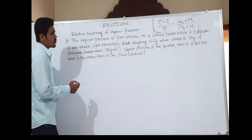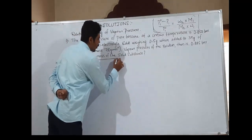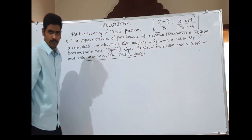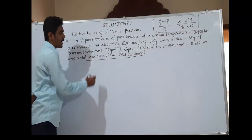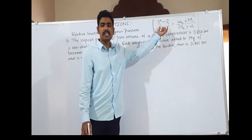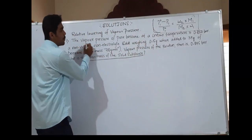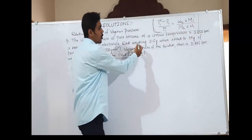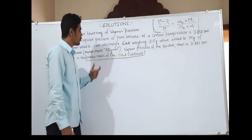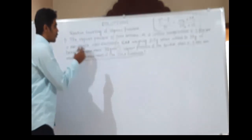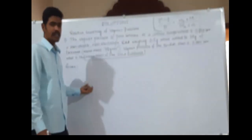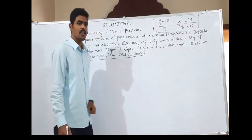They are asking us to calculate the molar mass of the solid substance — that is, a non-electrolyte solute. In order to calculate the molar mass, we have to use this formula, because they have given the vapour pressures of benzene and the vapour pressure of the solution. First, write out all the given values from the question, then use the formula to calculate.